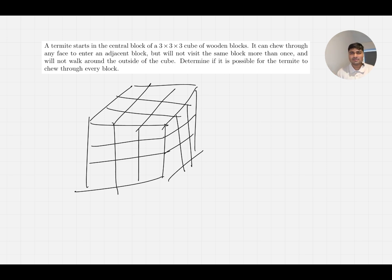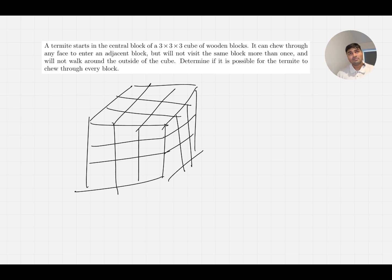My first thoughts are: maybe I could just try and envision some paths. It's a little bit difficult because it's a 3D cube, but I can maybe try and envision it and see if it's possible. If I do that, I can either see that it is possible — in which case, great, we're done — but I actually suspect you've given me this because it's not possible and I need to somehow prove that. So once I've tried a few paths and see it's not working, maybe I need to start thinking about why.